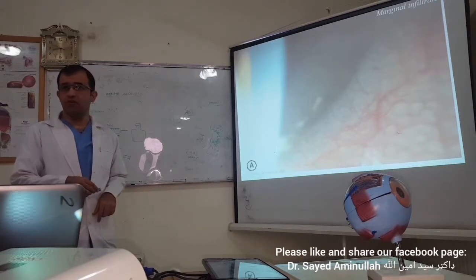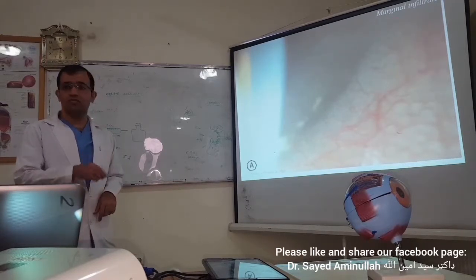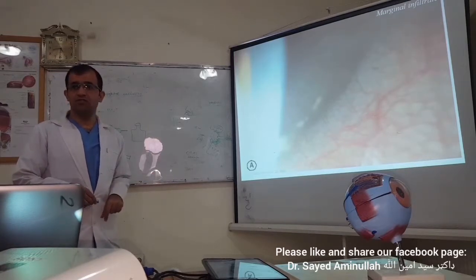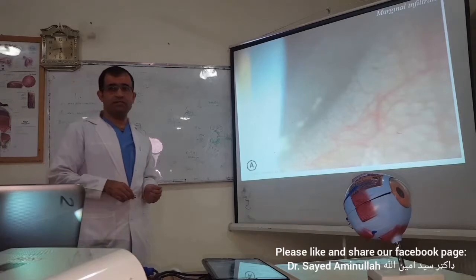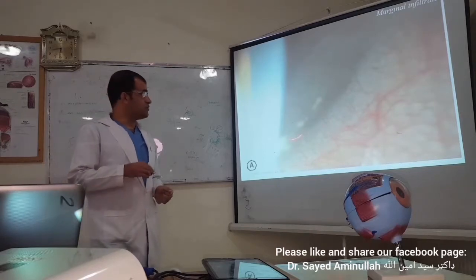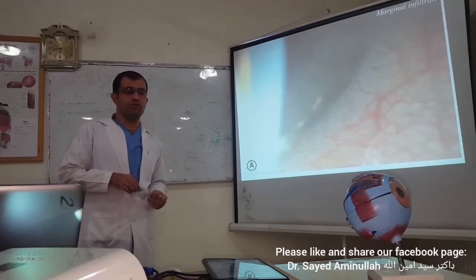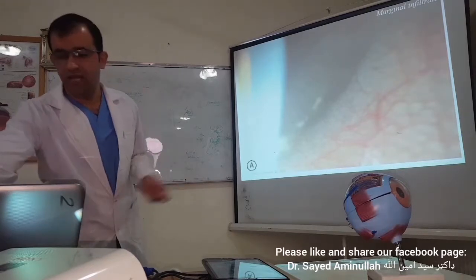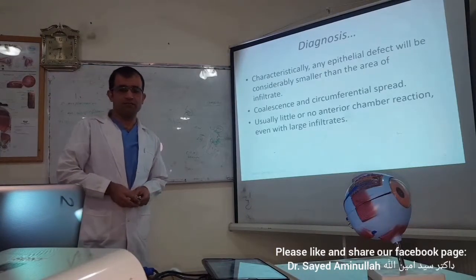The clear zone of hyperemia is also present. With these signs, you will also see — if you examine the lid margins — you will find the signs of chronic blepharitis. And also in some cases, in the inferior part of the cornea, you will see punctate epitheliopathy. So these findings together will confirm your diagnosis.